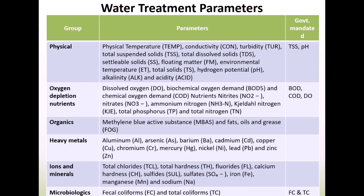Organics such as fats, oil and grease are also typically measured. The presence of heavy metals is looked upon with serious concern because these cause deadly diseases in humans such as cancer — lead, nickel, zinc, mercury and so on. Ions and minerals are standard water parameters: chlorides, hardness of water and other minerals. Microbiologics are present in human and animal waste — fecal coliforms and total coliforms are water quality parameters which sewage treatment plants struggle to control and treat effectively. The norms for these water quality parameters are set by state or central pollution control boards in India.